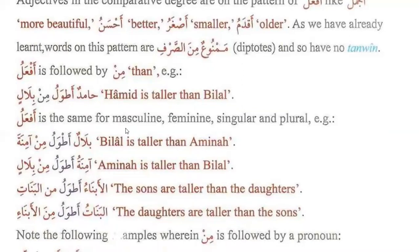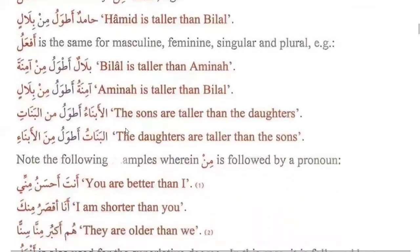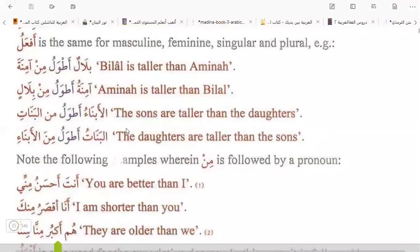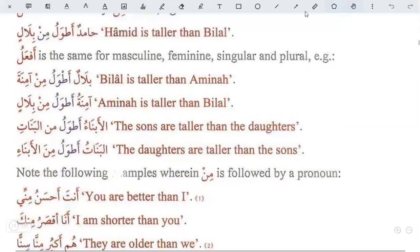For example: Hamid is taller than Bilal. The af'alu form is the same for masculine, feminine, singular, and plural. Bilal is taller than Aminatu. Aminatu is taller than Bilal. Aminatu is taller than the daughters. The daughters are taller than the sons.